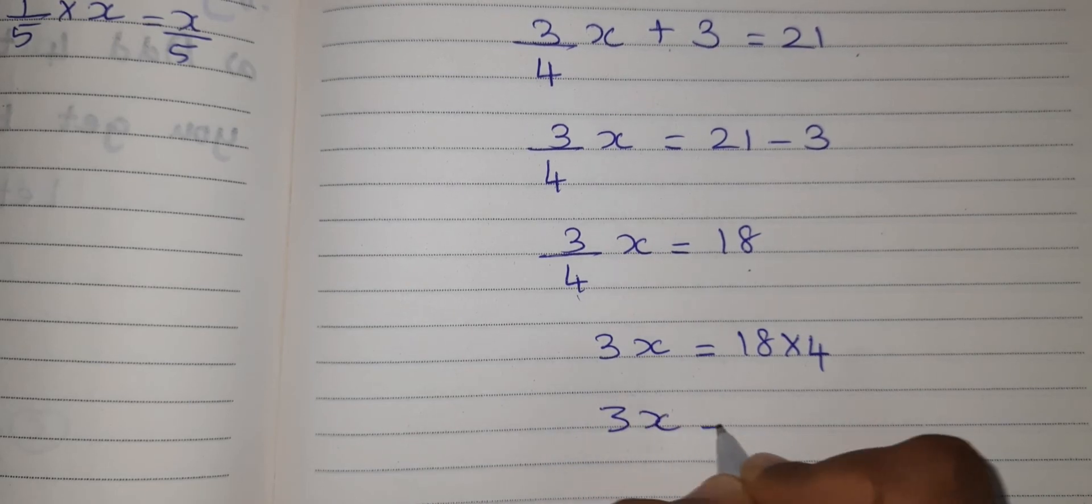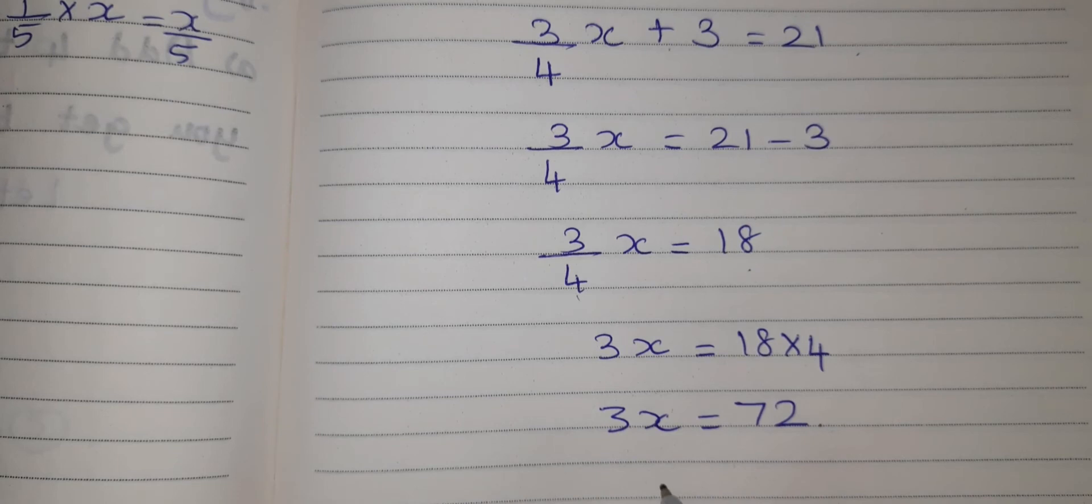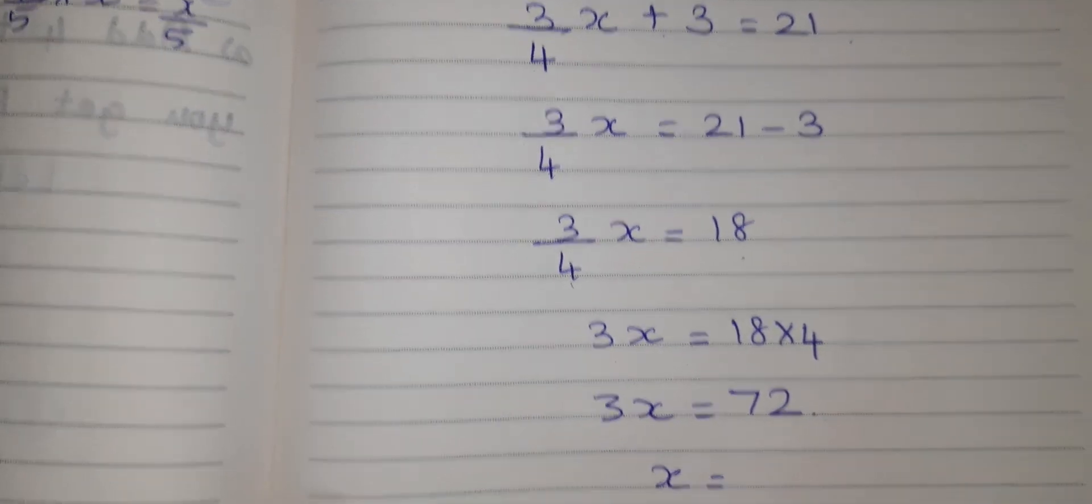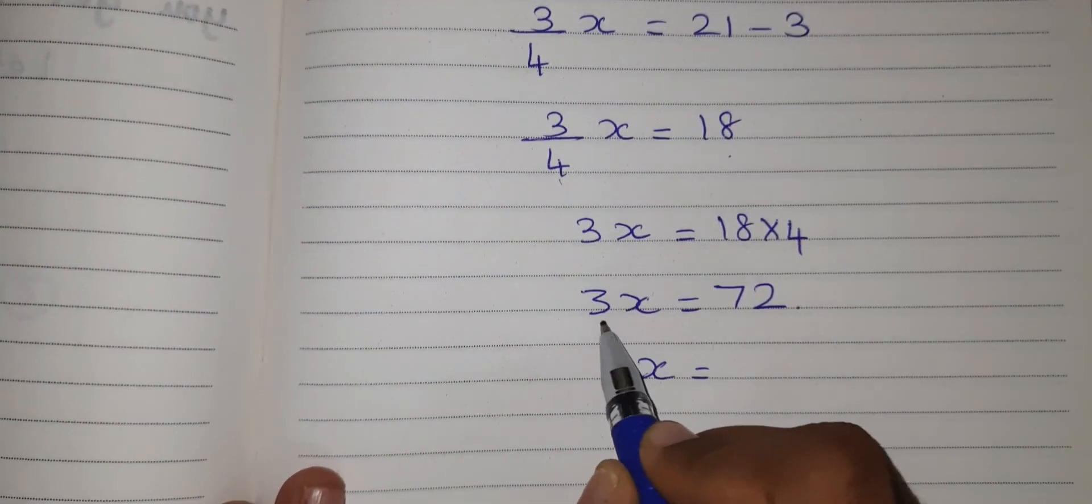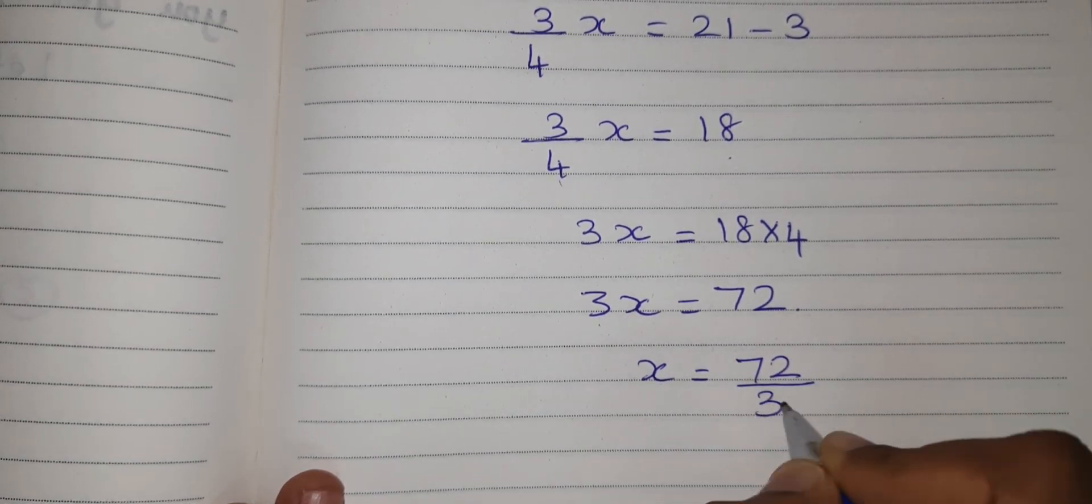So 3X equal to, what is 18 into 4? 72. Next I have to find out X. 3X, this is multiplication. When 3 goes to this side it will become division. So 72 by 3.